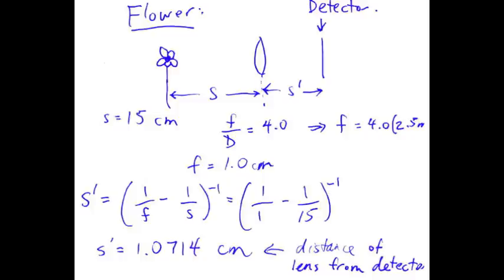Solving the thin lens equation for the image distance gives S prime equals the inverse of 1 over focal length minus 1 over object distance. Plugging in the numbers, I get S prime equals 1.0714 centimeters. That's when you're focusing on the flower — the proper distance of the lens from the detector is 1.0714 centimeters.